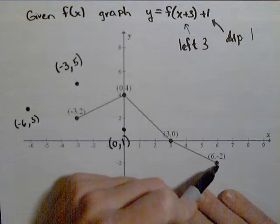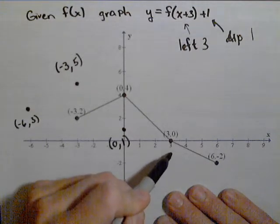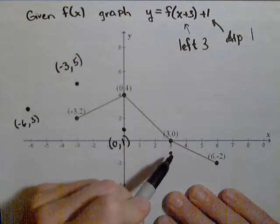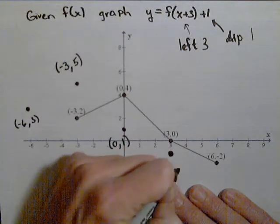And finally our last point, 6, negative 2, is going to go 1, 2, 3 to the left and up 1. So it's going to become the point 3, negative 1.